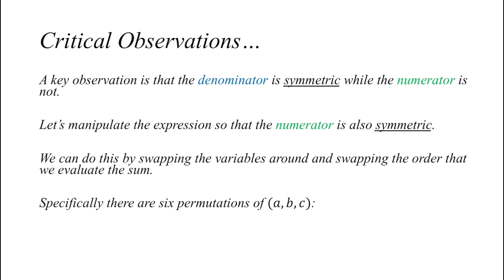So, specifically, there are six permutations of ABC, because of three factorial, which is six. So ABC, ACB, BAC, BCA, CAB, and CBA.